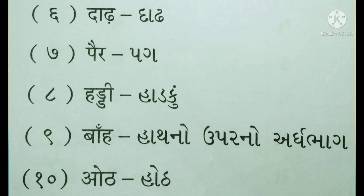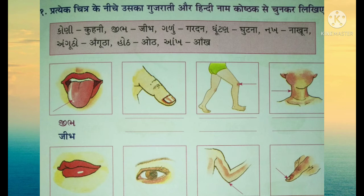આઠમો શબ્દ: હડ્ડી - ગુજરાતી: હાડકું. હવે સૂચનાનું વાંચન કરીએ - પ્રત્યેક ચિત્ર કે નીચે ઉસ્કા ગુજરાતી ઔર હિન્દી નામ, કોષ્ઠક સે ચૂનકર લિખો. એટલે - સૌ પ્રથમ આપણે કૌંસ/કોઠામાં આપેલા શરીરના અંગોના ગુજરાતી અને હિન્દી નામ પસંદ કરીને ત્યાં લખવાનું છે.